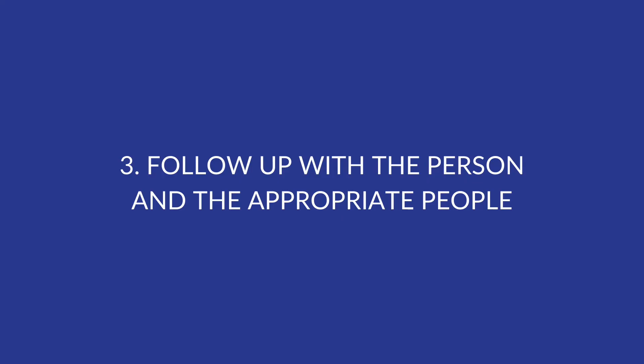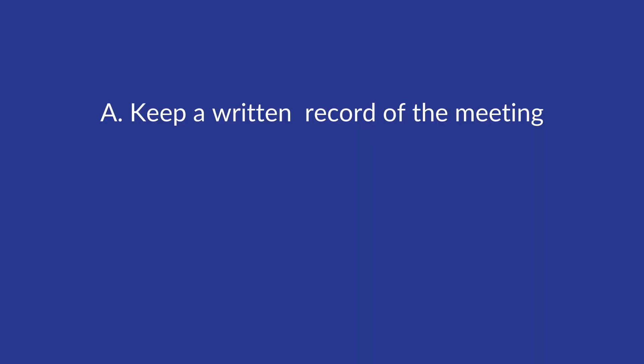Step 3: Follow up with the person and the appropriate people. Now that you've had the difficult conversation, you'll need to take the next steps. Who needs to know? Who will take responsibility to help the person get their life together and over what time frame? Step 3A: Keep a written record of the meeting. Make notes on what happened, what was said and what you did about it. These records must be strictly confidential, objective and not prejudicial.